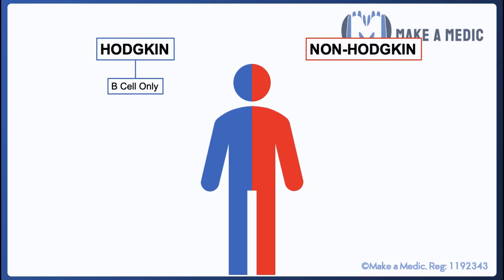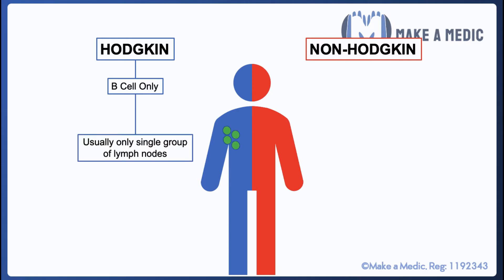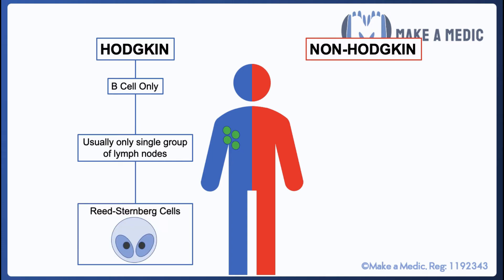Hodgkin's lymphoma is a disease that only affects B cells, and it tends to only produce a single group of enlarged or diseased lymph nodes within the body.